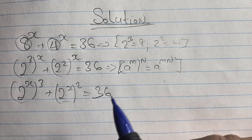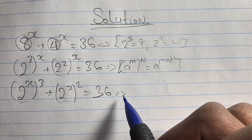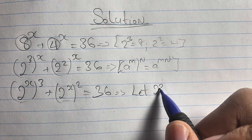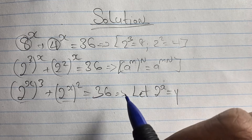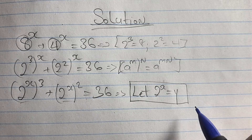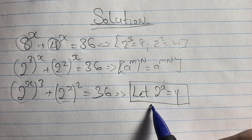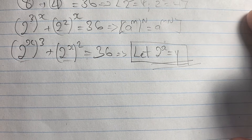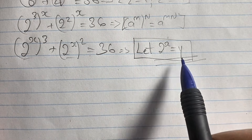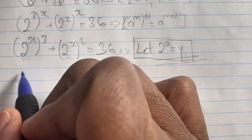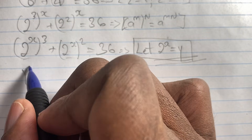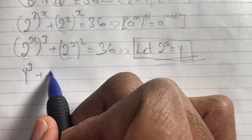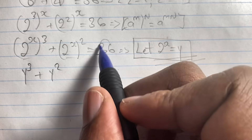Now since 2 to the power of x is common in both terms, we can simplify our equation a bit further. So we let 2 to the power of x equal y. Please remember this as we go further into solving our equation. From here on forward we say y cubed plus y squared is equal to 36.